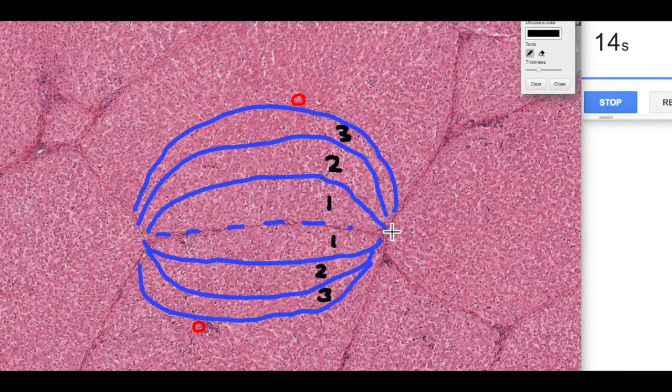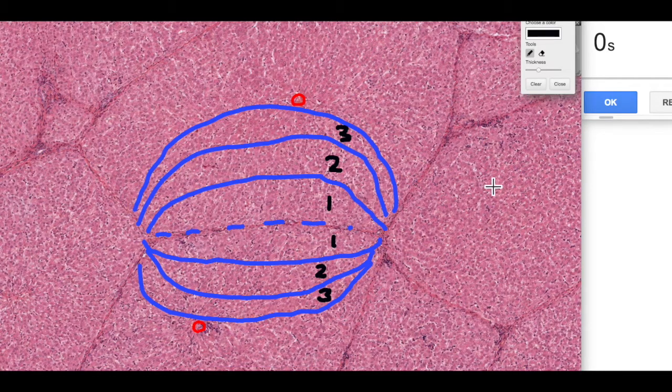So this is the liver acinus model. It considers perfusion of blood and how the cells deal with the various conditions of that blood, whether it's high oxygen, low oxygen, whether it's got toxins and so on. This is the most functionally, clinically functionally relevant of the three models of the liver lobule structure.